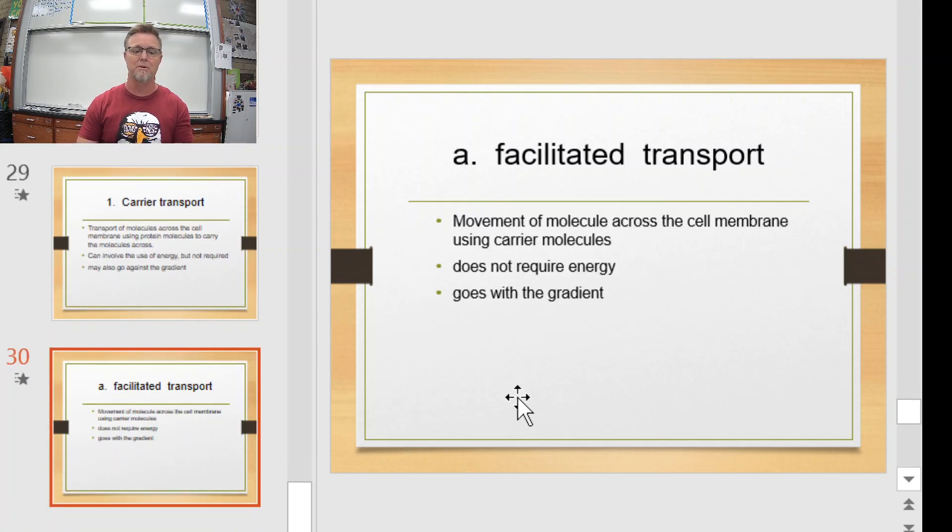So let's work through this. This is facilitated transport, also known as facilitated diffusion. This is the movement of molecules across the cell membrane, still going from high to low, but we're going to use a protein channel to help provide easy access for larger charged molecules to cruise across the membrane. Doesn't require energy, and it goes with the concentration gradient or downhill.